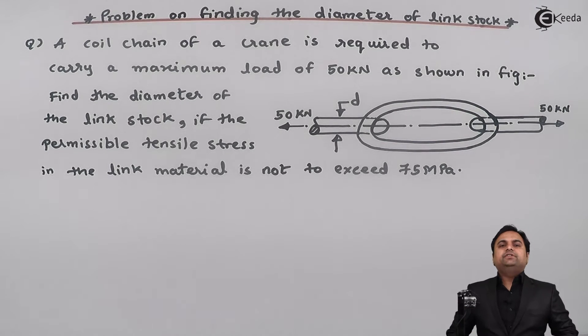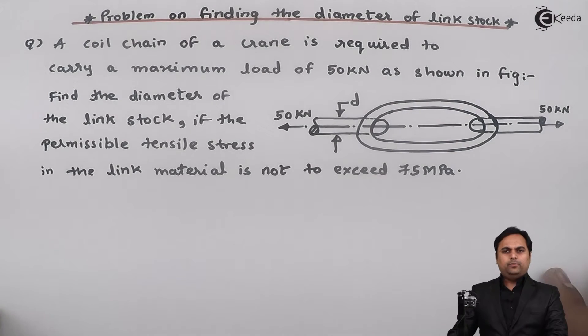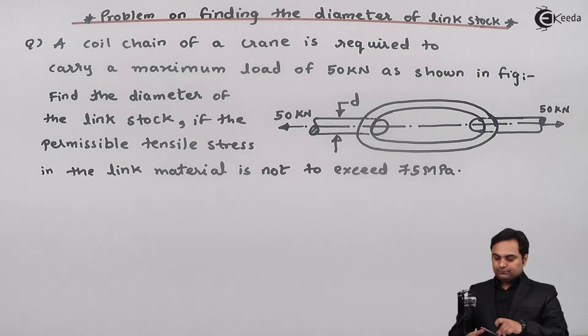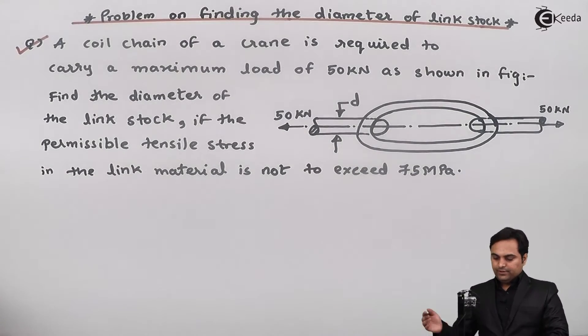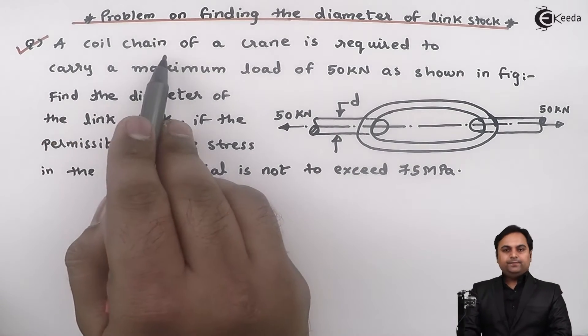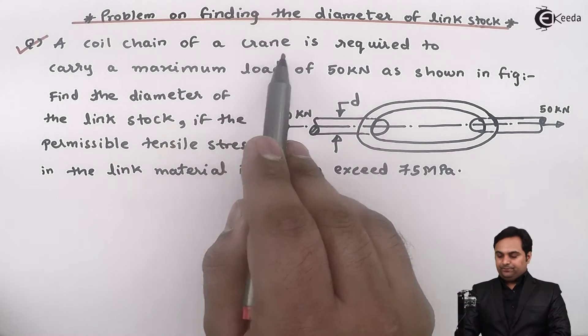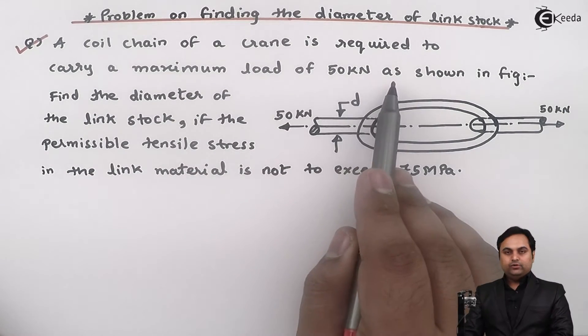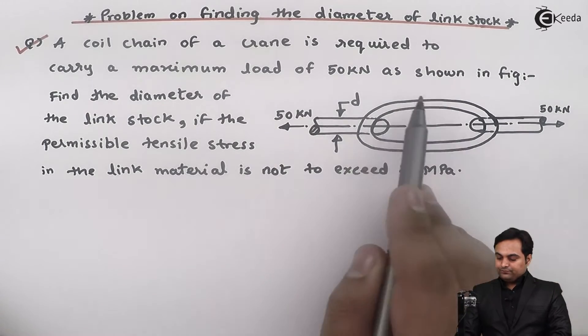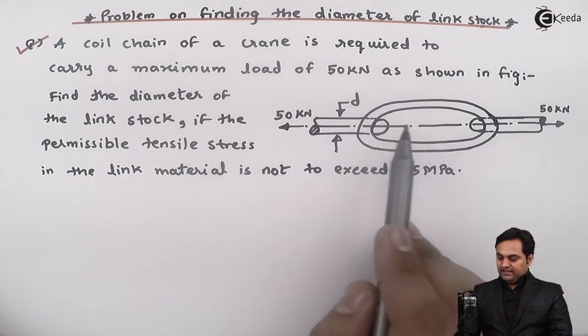Hello students, in this video we are going to see a problem in which we have to calculate the diameter of a link stock. A coil chain of a crane is required to carry a maximum load of 50 kN as shown in the figure.